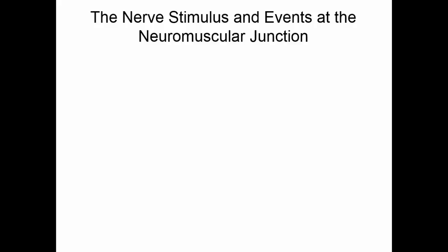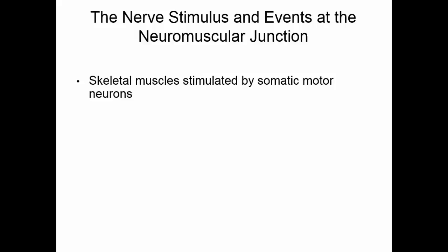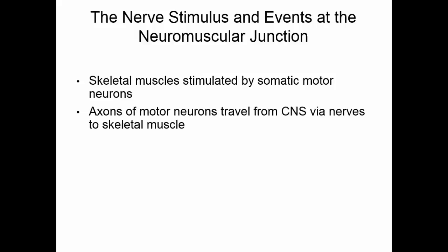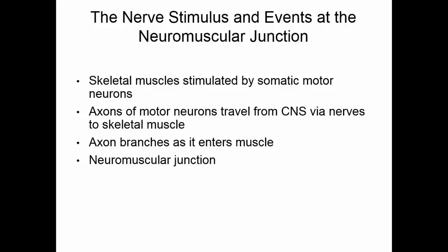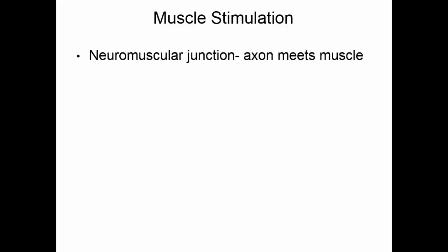Nerves have to stimulate the muscles to contract. The skeletal muscle is stimulated by a somatic motor neuron. The axons of these motor neurons travel in a single nerve from the central nervous system to the skeletal muscle. As the nerve enters the muscle, the axons of the neurons branch to go to individual muscle cells. They form what's called a neuromuscular junction — this is where the axon end will communicate with the muscle fiber, the location where the axon and the muscle interact.